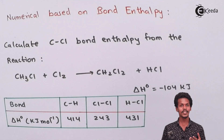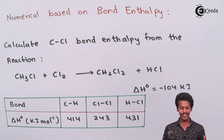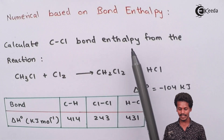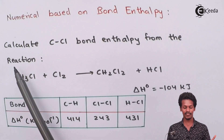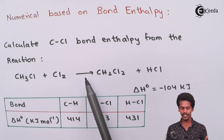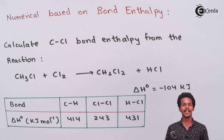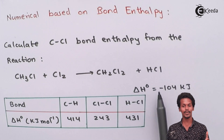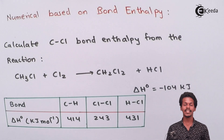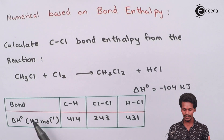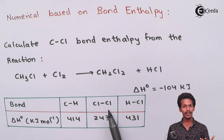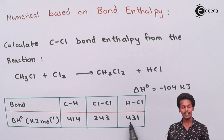This question is based on bond enthalpy. We have to calculate the carbon-chlorine bond enthalpy from the reaction: CH3Cl + Cl2 → CH2Cl2 + HCl. The standard enthalpy of reaction has been found to be minus 104 kJ. The data provided includes: bond enthalpy of C–H = 414, Cl–Cl = 243, and H–Cl = 431 kJ/mol.